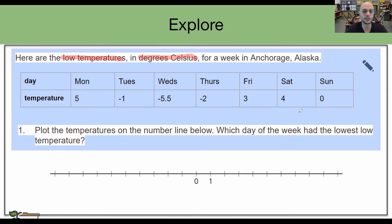So what do they want us to figure out? It says plot the temperatures on the number line below. That right there is our instructions. Plot the temperatures on the number line below. That's really, really important. So we have this number line and we need to somehow take these numbers and put them on this number line. Then it says which day of the week had the lowest low temperature? Lowest low? Can a low be lower than another low? Is that possible?